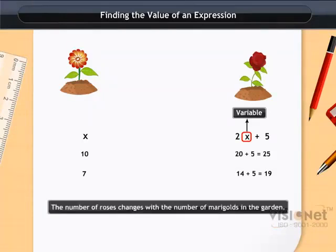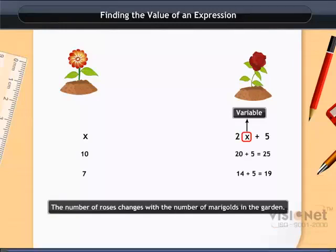So we find that the number of roses changes with the number of marigolds in the garden. In this way we can find the value of an expression by merely substituting the value of the variable in the expression.